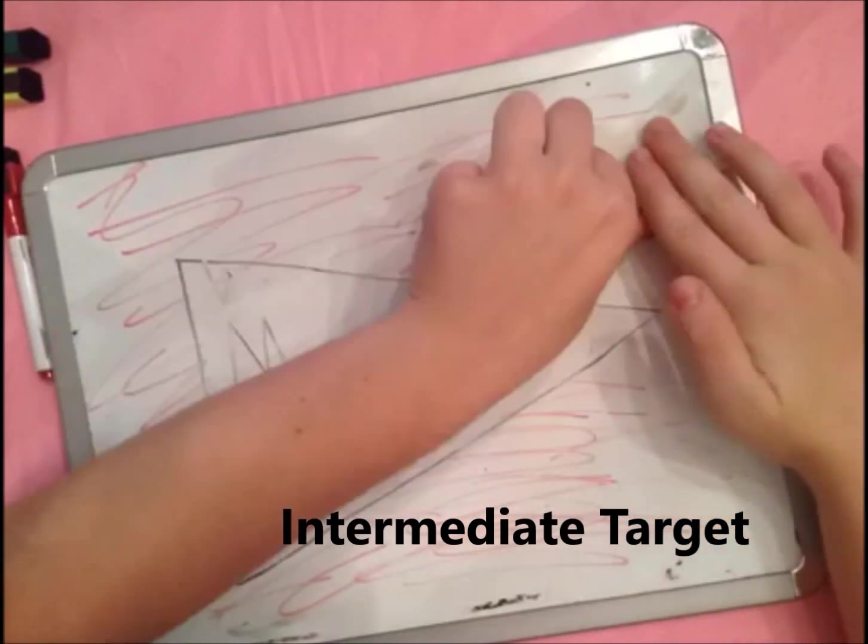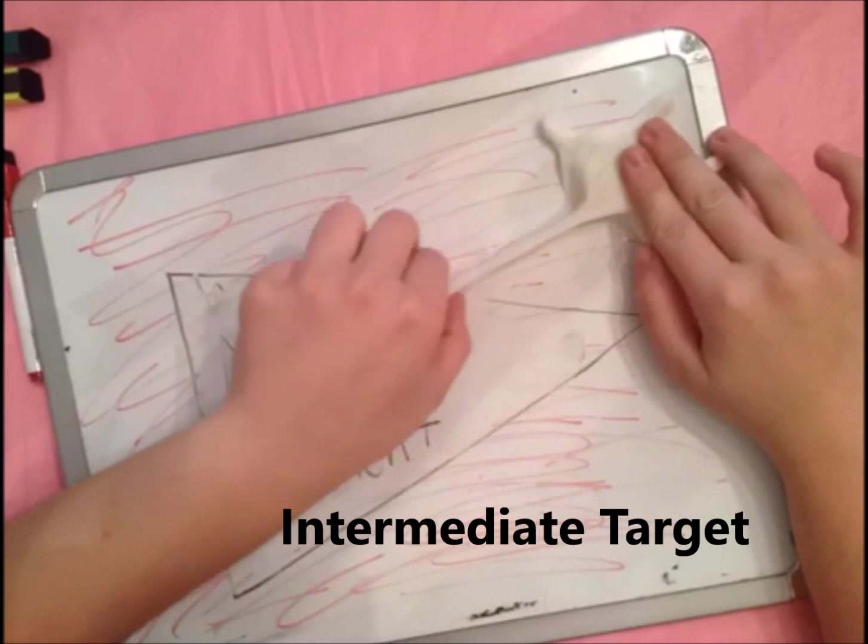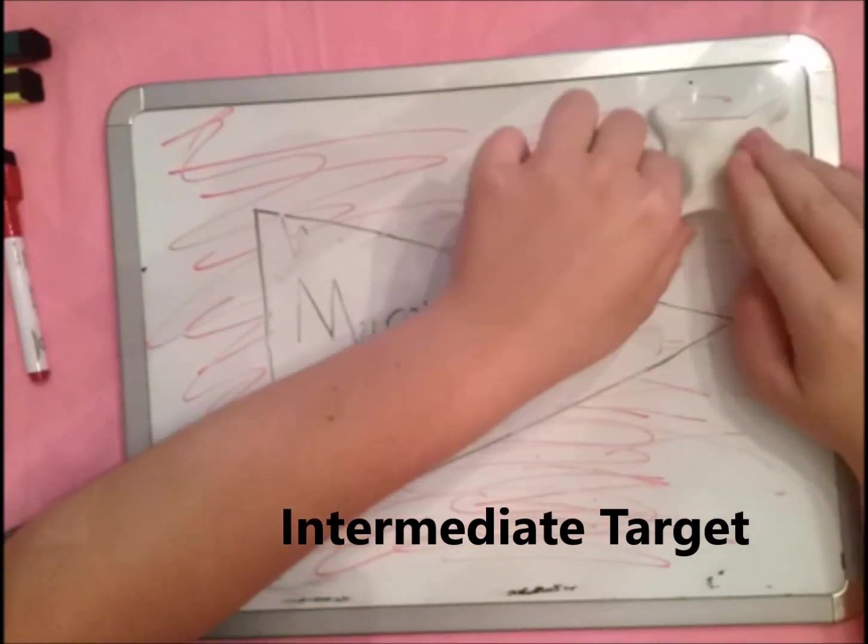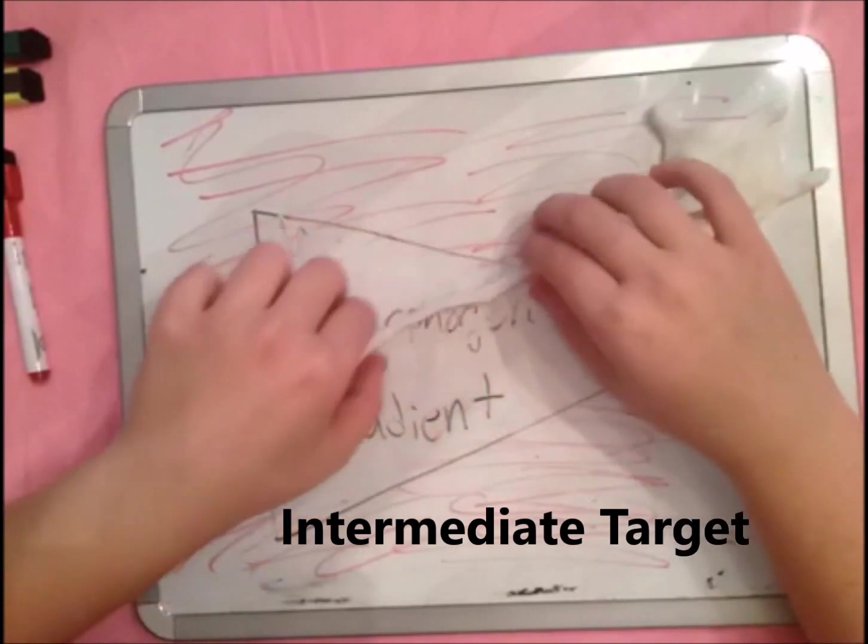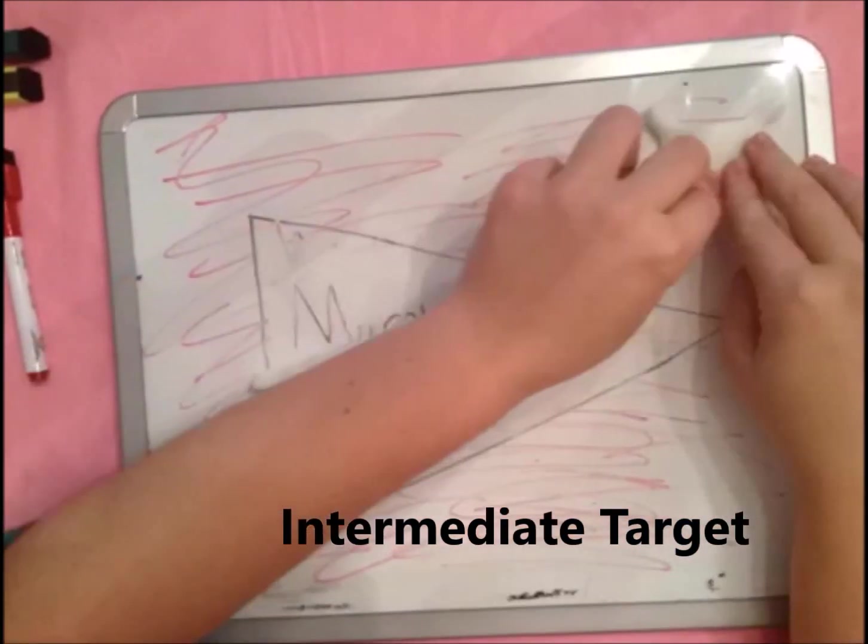Often this intermediate target tissue will secrete proteins that initially attract certain growth cones, but upon reaching the target, the growth cone changes directions, because after reaching the highest concentration of that specific protein, the responsiveness to the protein changes.